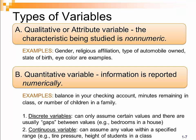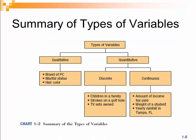You might think you can have two and a half baths in a house, and that is true, but technically it's not half of a bathroom — it's just a term used to identify when there is no shower or bathtub in that bathroom. Continuous variables can assume any value within a particular range, such as weight, height, or tire pressure. For reference, here is a summary of the types of variables: qualitative and quantitative, with discrete and continuous as subsets of quantitative, along with examples of each.